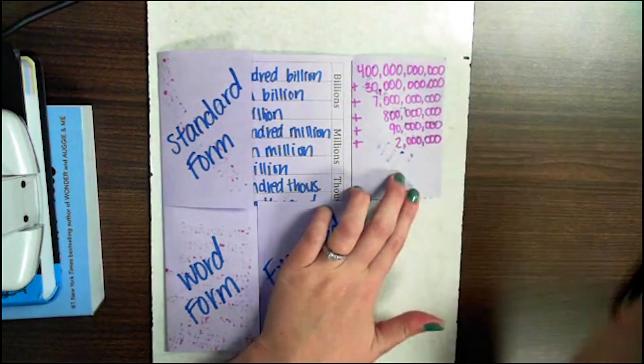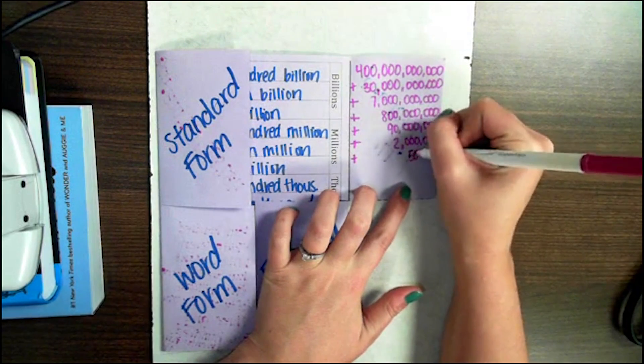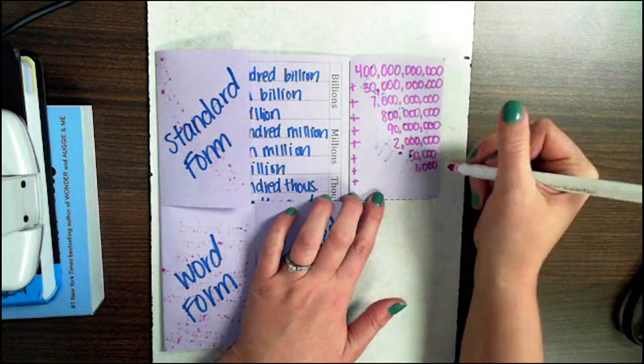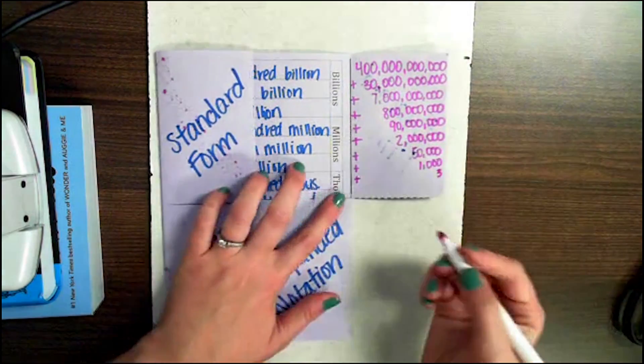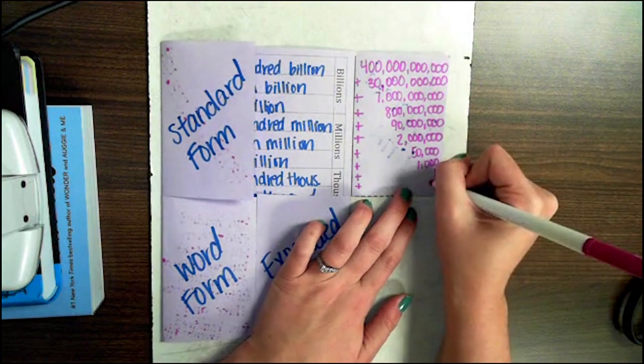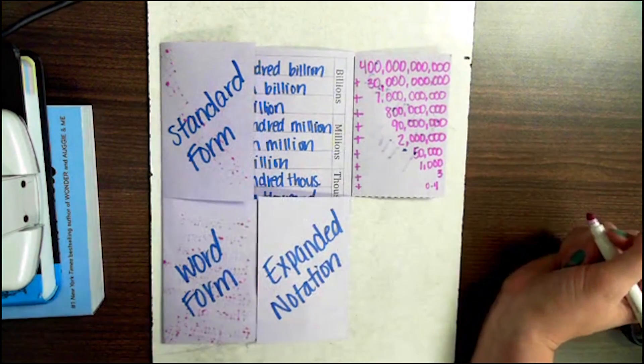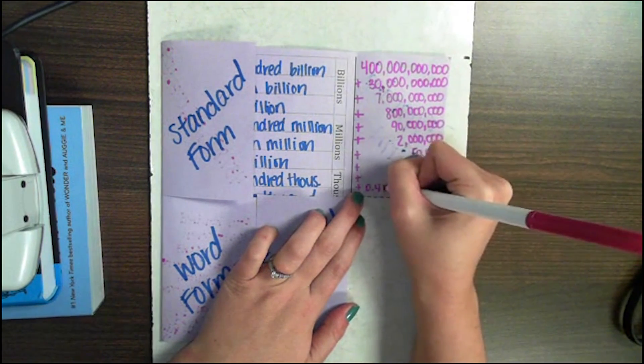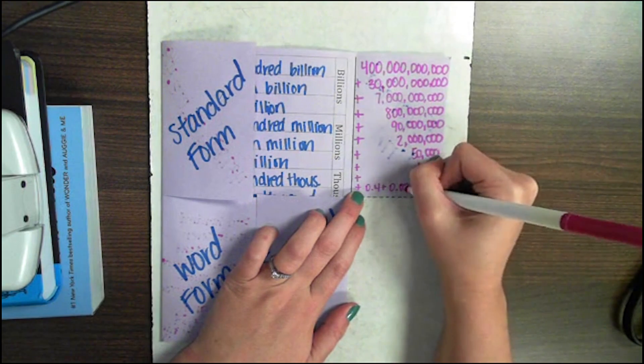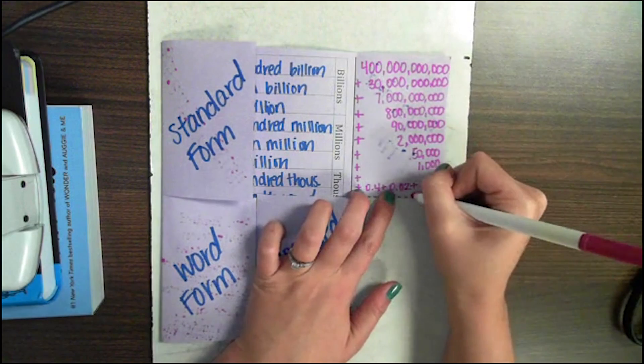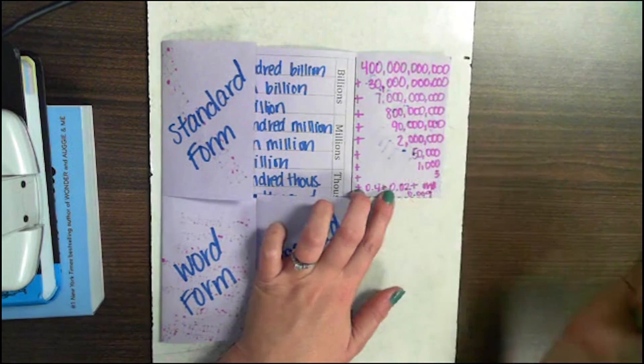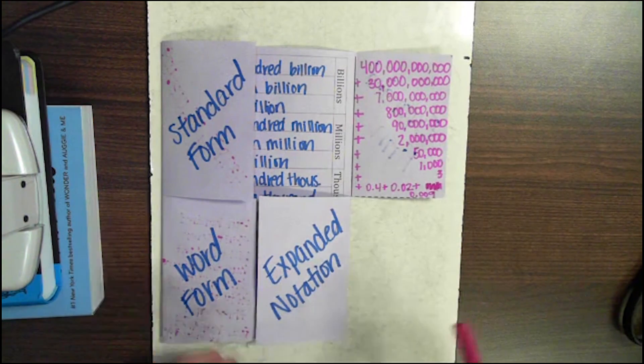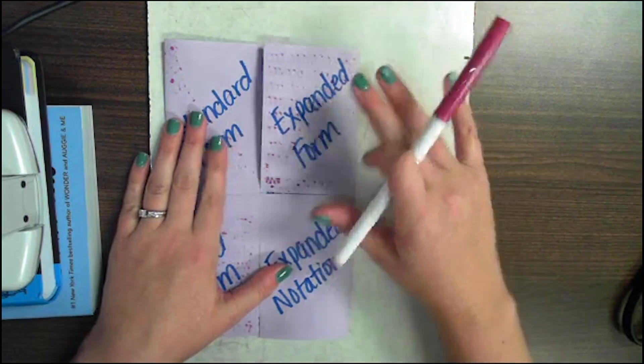Lots of zeros. Plus 90 million. Who thinks I'm going to run out of room? Plus 2 million, plus 50 thousand, plus 1 thousand, plus 3. Plus 4 tenths plus 2 hundredths plus 9 thousandths. That is our expanded form, which should look familiar to you.